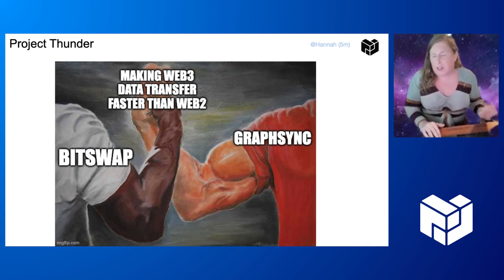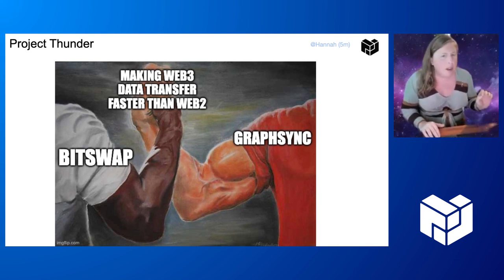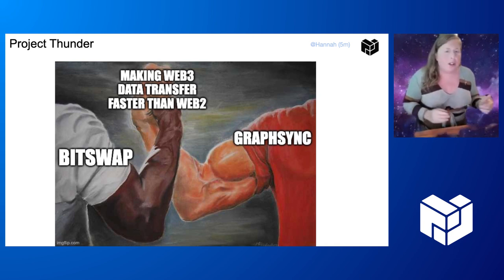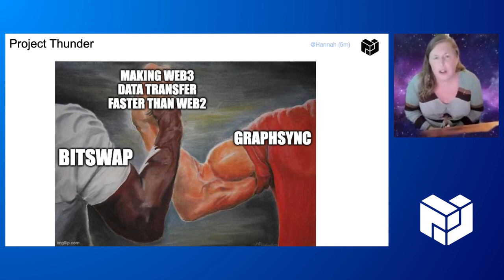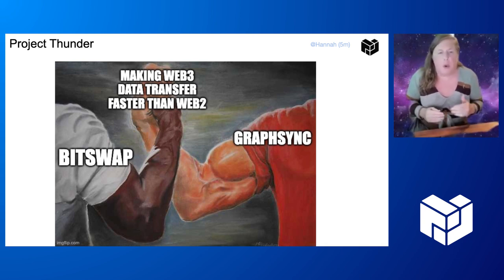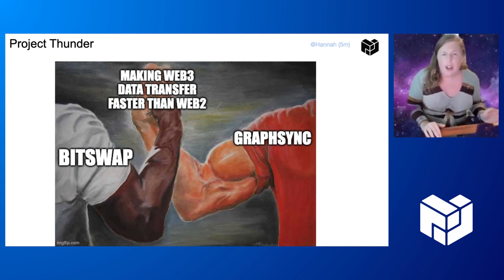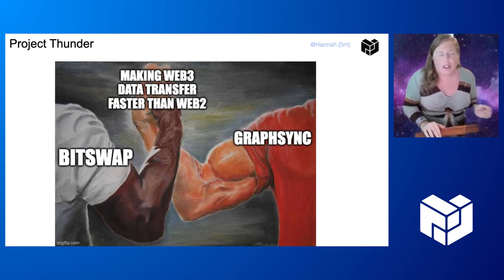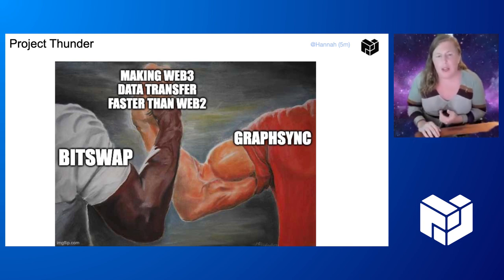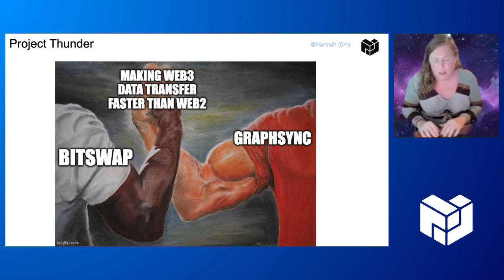BitSwap lags behind BitTorrent in performance sometimes because BitTorrent starts with more information at the start about the structure of data you're downloading. So what if GraphSync could be used to quickly discover that information? How much faster could BitSwap be? These are the kinds of questions we're aiming to answer.